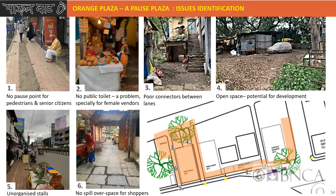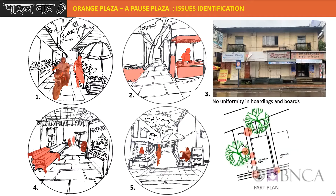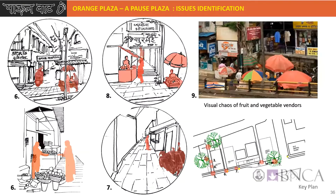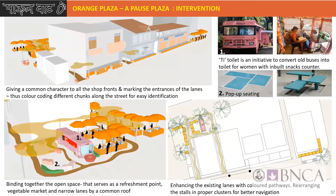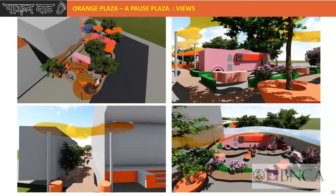The first one is the orange plaza, a pause plaza, which is near Deccan Monday. The main issues identified here were no pause points for pedestrians who are connectors between lanes. Some of the sketches show the typical character of this area. The design intervention is to give a common character to all shopfronts and mark the entrances of the lanes, color-coding different chunks along the streets for easy identification. Certain elements like old walls converted into toilets and pop-up seating can be introduced here to enhance the user experience.